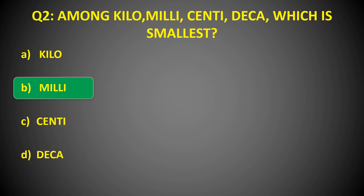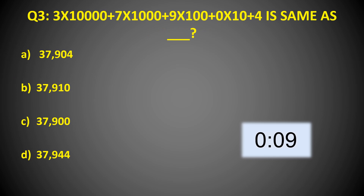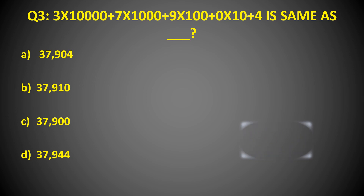Here goes your next question: 3 × 10,000 + 7 × 1,000 + 9 × 100 + 0 × 10 + 4 is same as? Time's up! And the right answer is Option A: 37,904.